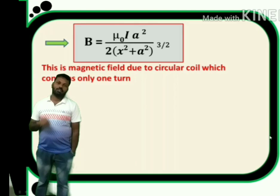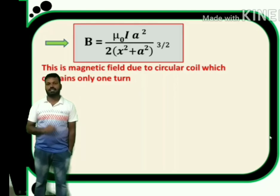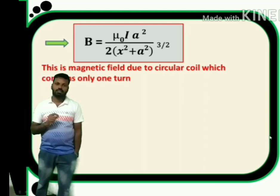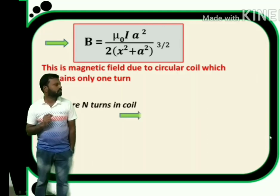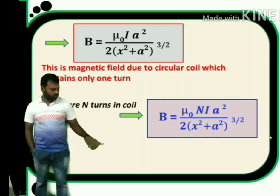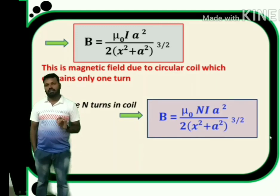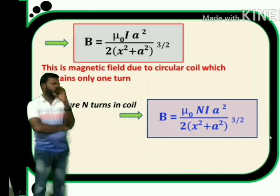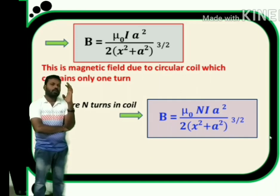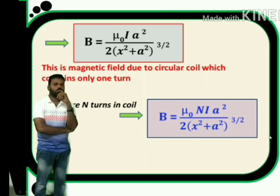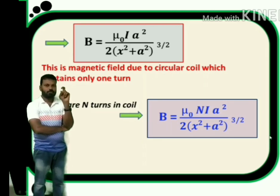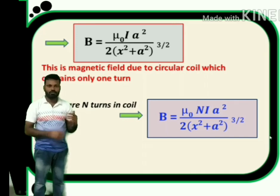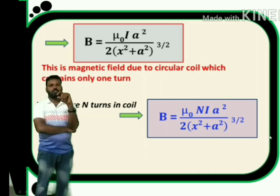This is the magnetic induction due to a coil with only one turn. If the coil has N turns, then the magnetic induction formula becomes B = μ₀ N I a² / [2(x² + a²)^(3/2)]. That means if you increase the number of turns, the magnetic induction increases that many times.